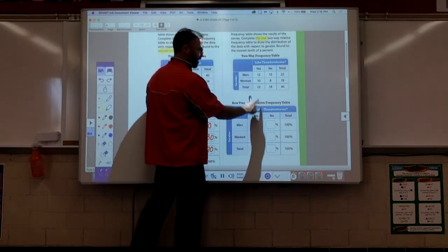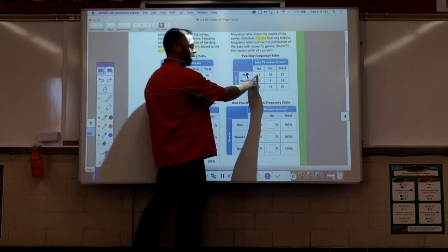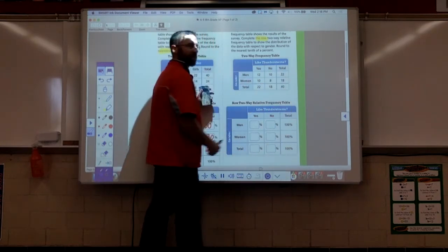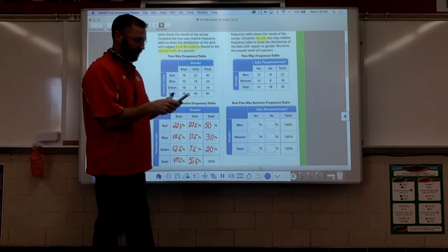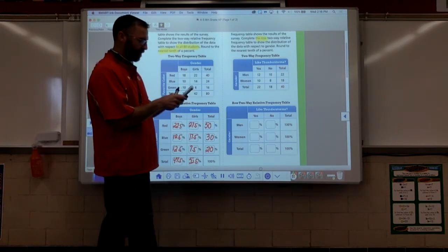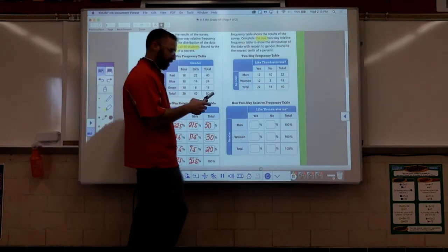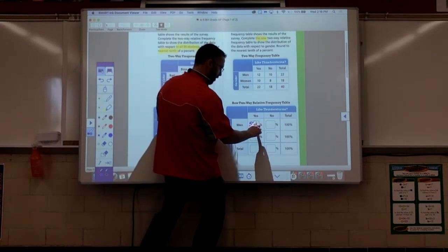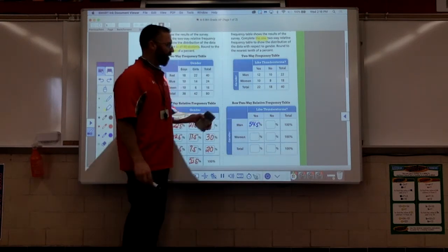It says compare it to the row. So men percent, it is 12 out of how many? How many men like thunderstorms? It's 12 out of the row's total, so it's 12 out of 22. 12 divided by 22 times 100, to the nearest tenth of a percent, this comes out to be 54 and a half percent.